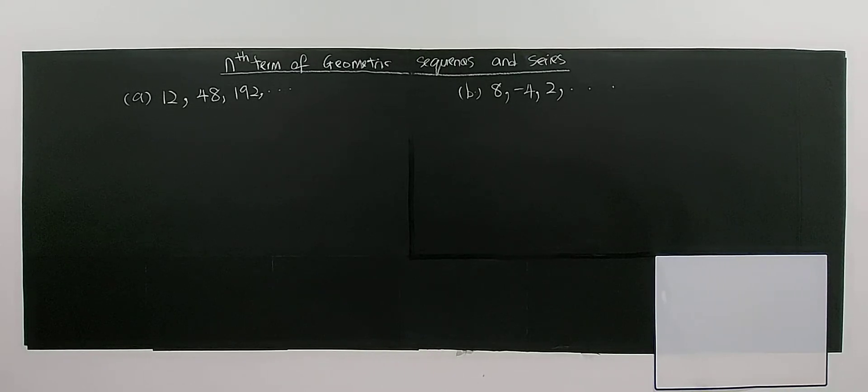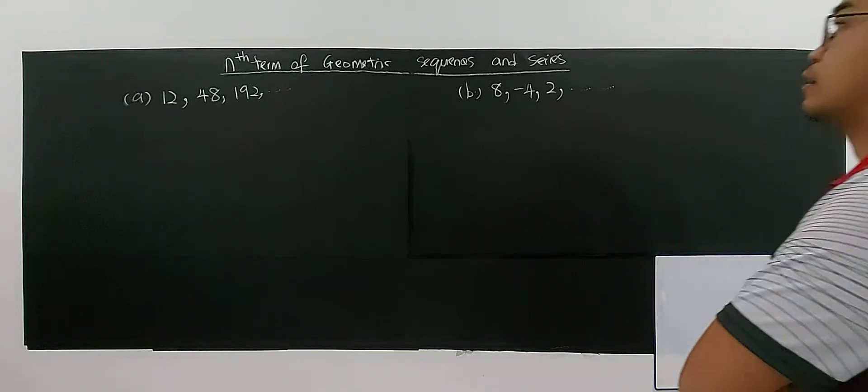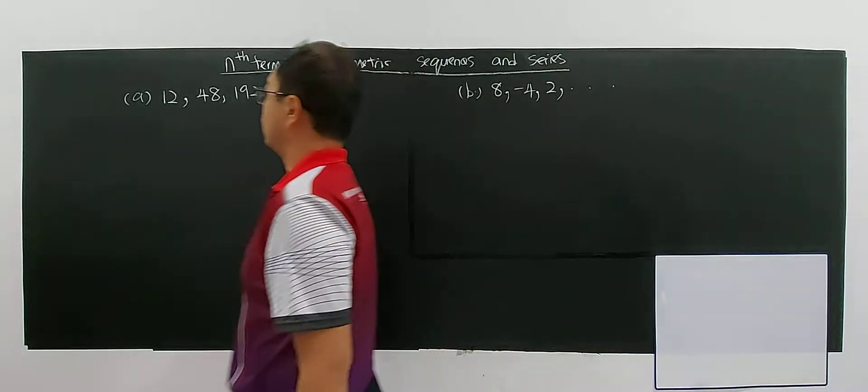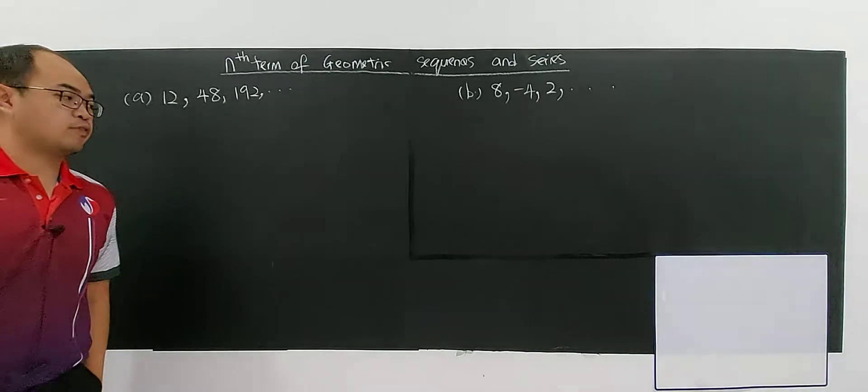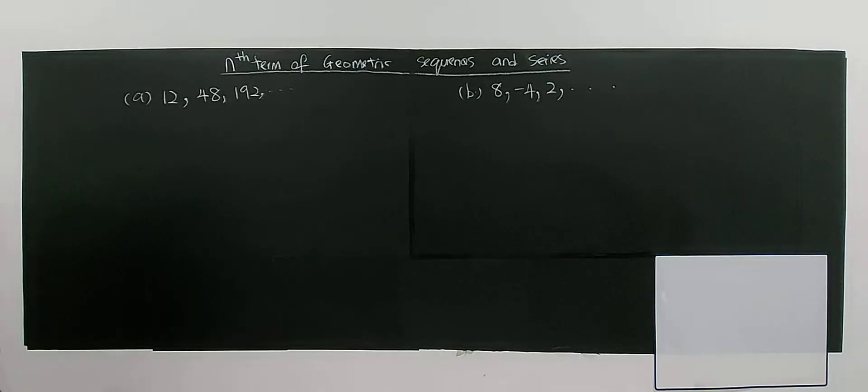This question is the basic question for using the formula for the n-term of a geometric sequence. Alright, so this question is asking to find the ratio, right? The common ratio.